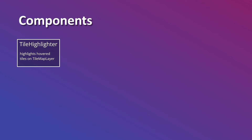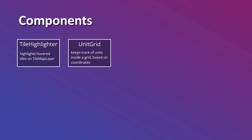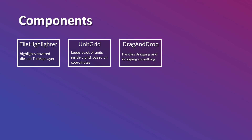We have the tile highlighter, which is solely responsible for highlighting a hovered tile on a tile map layer node. This is used when you move the mouse over the bench, and it can be reused again when you move the mouse over the game area. Then we have the unit grid, which is more of a gameplay logic related component — it keeps track of units inside the grid based on coordinates. Then we have a drag and drop component which handles dragging and dropping something. This is super useful because in season two, where we introduce items similar to how it works in Teamfight Tactics, you can drag and drop items over units and reuse the same drag and drop component.